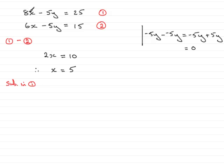And if we do that, what do we have? Well, we have 8 times x, so that's 8 times the 5, because x was 5, minus 5y equals the 25.